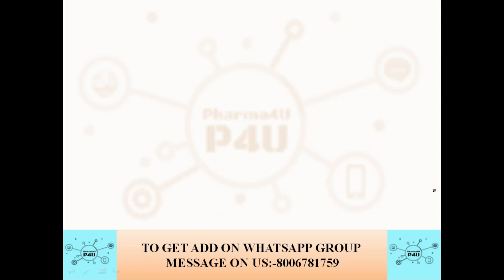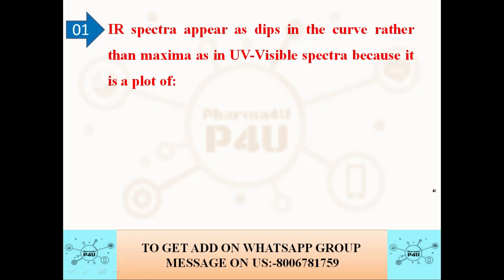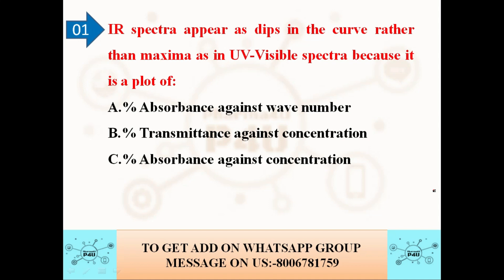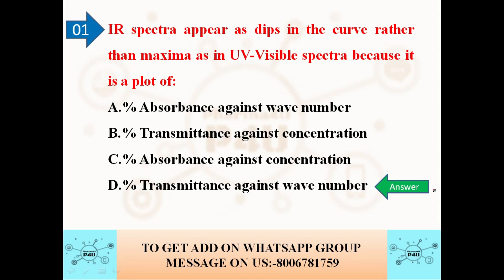The first question is: IR spectra appear as dips in the curve rather than maxima as in UV visible spectra because it is a plot of — option A: percentage absorbance against wave number; option B: percentage transmittance against concentration; option C: percentage absorbance against concentration; option D: percentage transmittance against wave number. The correct answer is that IR spectra are plotted as percentage transmittance against wave number.